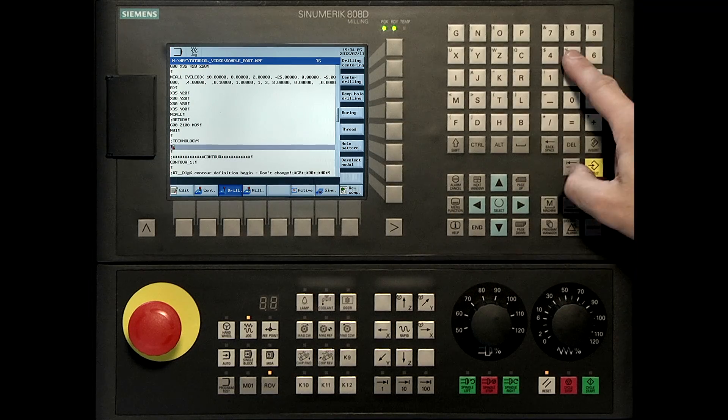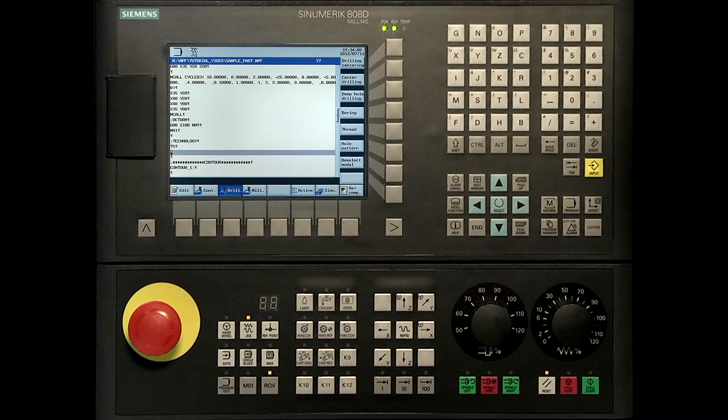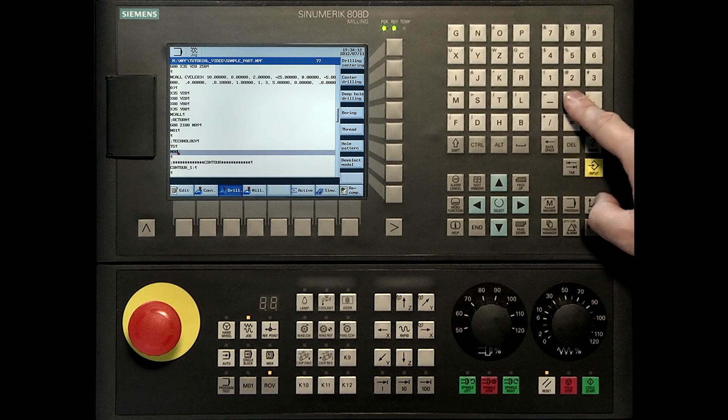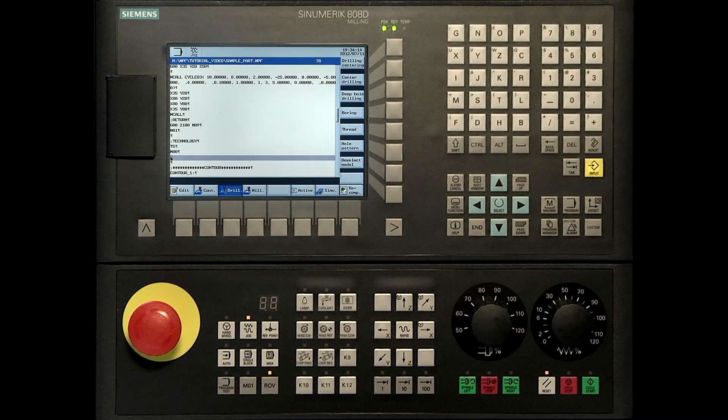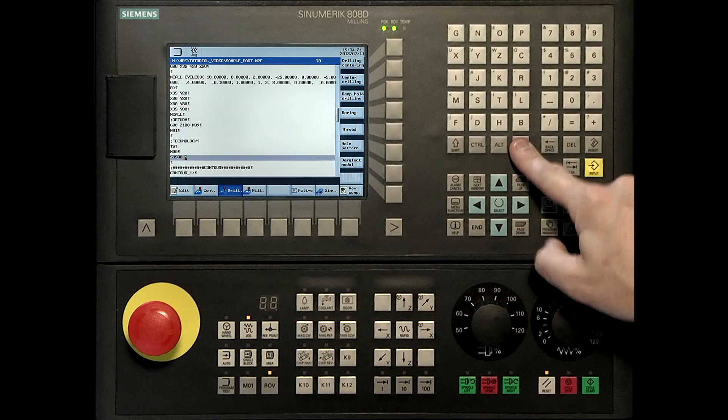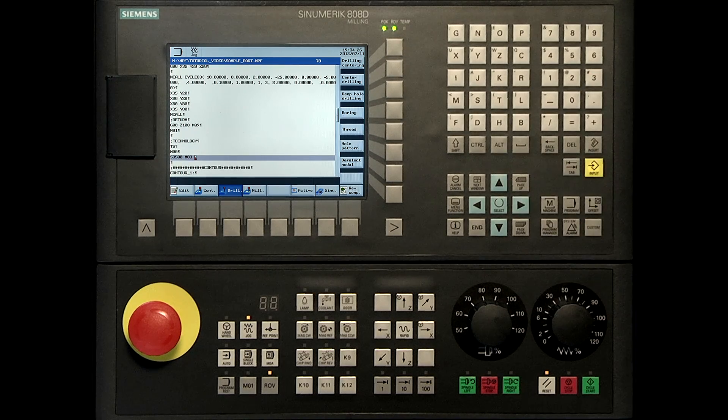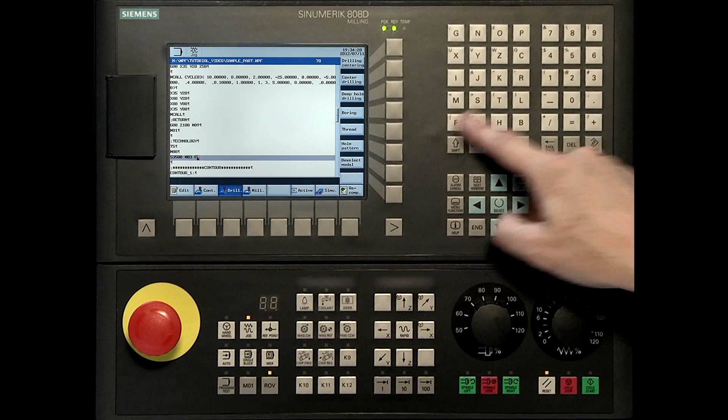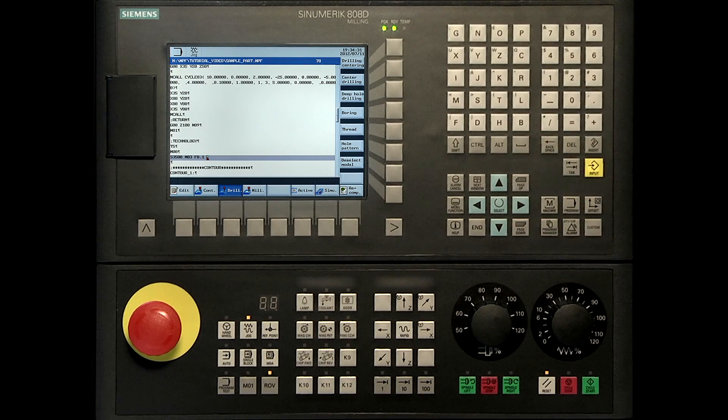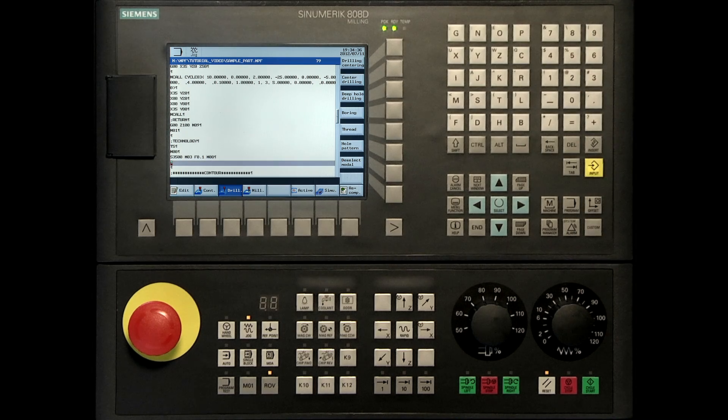T5. A drilling tool is now used. M00, change tool. S3500, M03, F0.1, M08. Changing the spindle speed and the feed rate, activating the coolant.